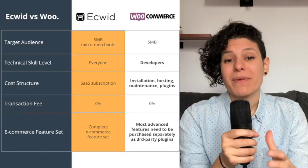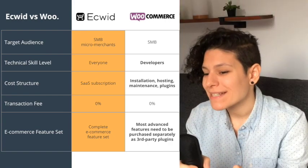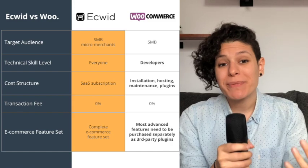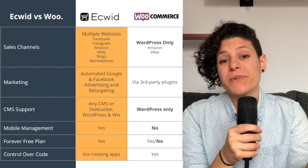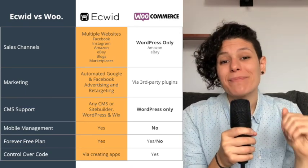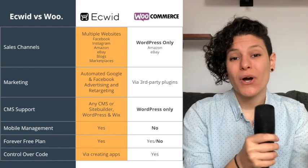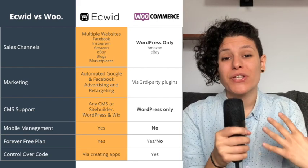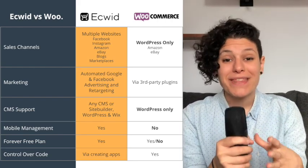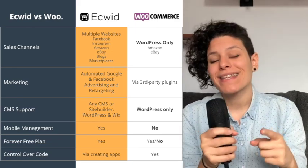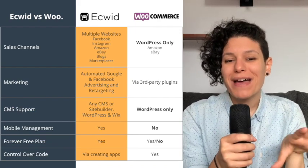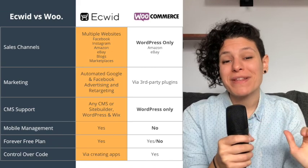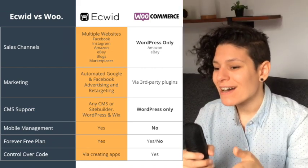WooCommerce's target market is also small and medium-sized businesses, but it's more oriented towards developers. WooCommerce is generally difficult for beginners and requires merchants to handle maintenance and hosting themselves. It looks cheap at the beginning, but you can easily crash your online store. WooCommerce is also limited to WordPress — but with Ecwid, you can embed your store into a WordPress site without relying on WooCommerce. Since Ecwid is a SaaS solution, they take care of all backend updates, security, and maintenance for a fixed monthly fee.